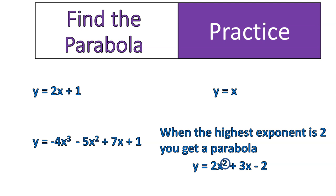So if it has a higher power than 2, or a lower power than 2, actually, it can have a lower power than 2. But if it only has a lower power than 2, and it has a higher power than 2, then you are not looking at a parabola.